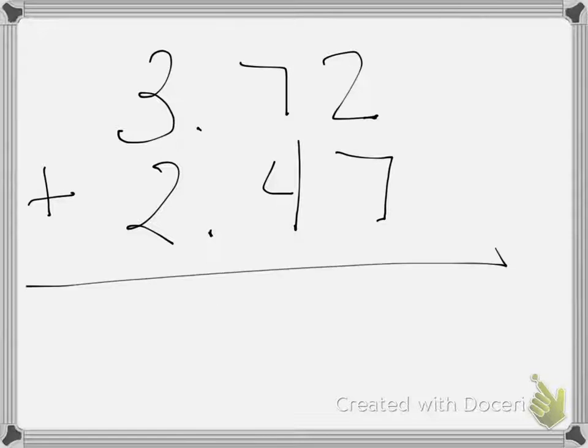So let's say we had 3.72 plus 2.47. And they're all lined up, and I can add them. 2 plus 7 is 9, 7 plus 4 is 11, and I'd have to carry my 1. 3 plus 2 is 5, plus 1 is 6.